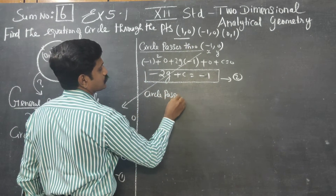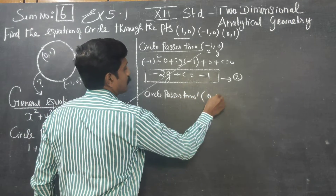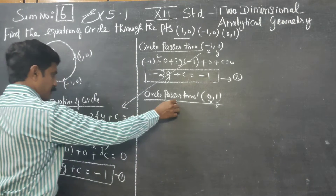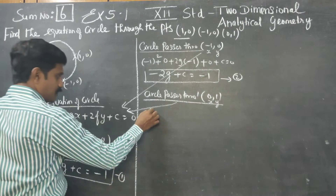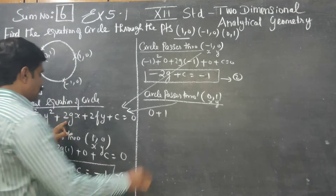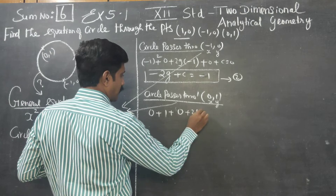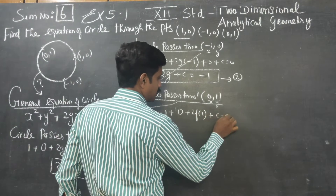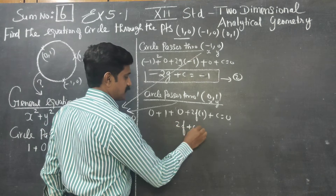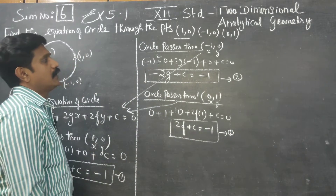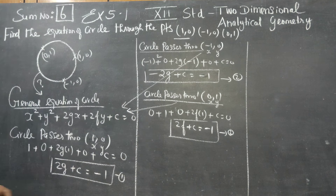Finally, the circle passes through (0,1). After substituting x = 0 and y = 1 into the general equation, we obtain equation number 3.